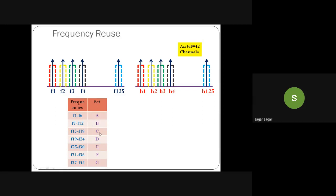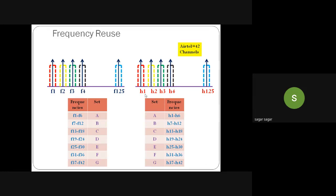So I have seven sets A through G, each with six channels. This is written for uplink; a similar arrangement exists for downlink — set A means H1 to H6, set B means H7 to H12, and so on. Set G has six channels in it as well.